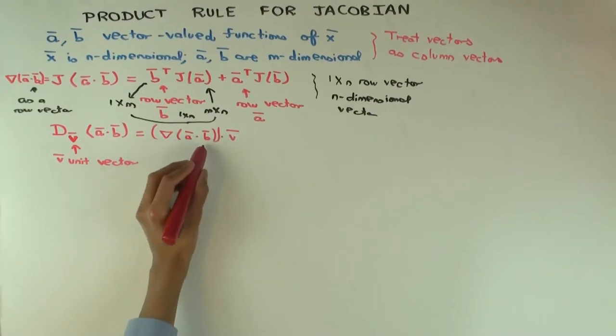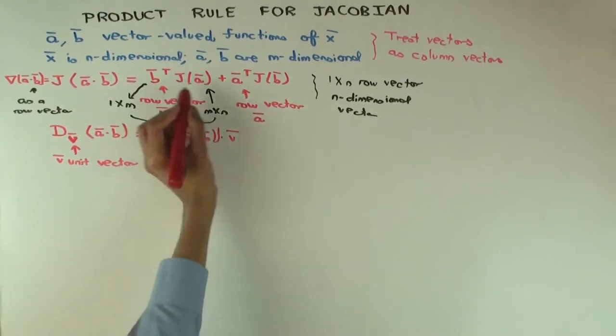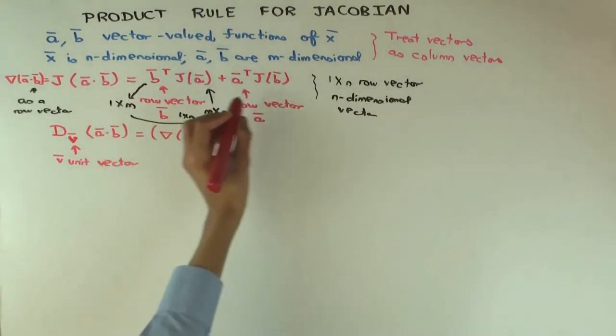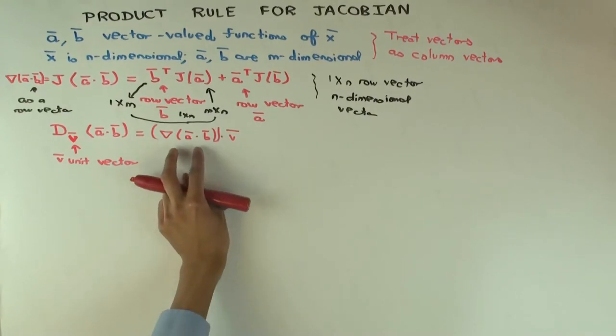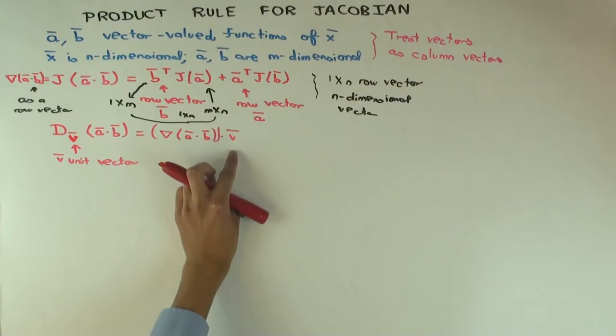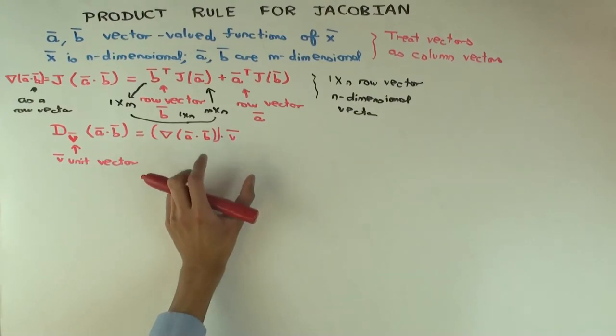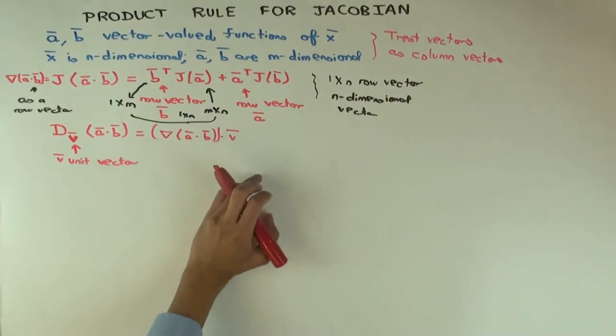Now we already have an expression for the gradient of a dot b, that's this. And this gives you the gradient as a row vector. Now when you take dot product of two vectors, and one is written as a row vector, the other one is written as a column vector, that's just like vector multiplication. Dot product of two vectors is just multiplying the first one as a row vector by the second one as a column vector.